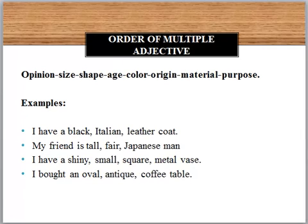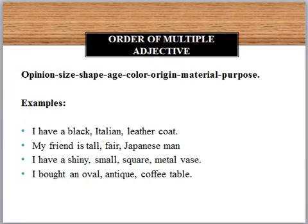For example: I have a black Italian leather coat. 'Coat' is your noun. I have three adjectives qualifying it in sequence: 'black' comes under color, 'Italian' under origin, and 'leather' under material. Another example: my friend is a tall, fair, Japanese man. 'Man' is the noun. 'Tall' shows size, 'fair' shows color, and 'Japanese' shows origin.